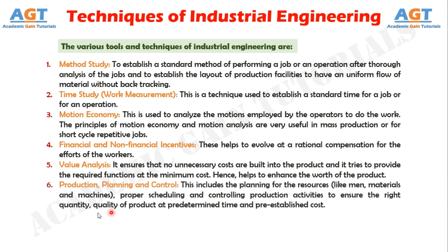6. Production Planning and Control: this includes the planning for resources like men, materials, and machines, proper scheduling and controlling of production activities to ensure the right quantity and quality of product at a predetermined time and pre-established cost.